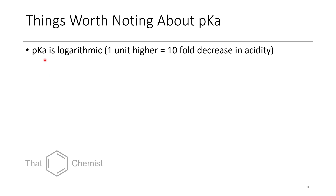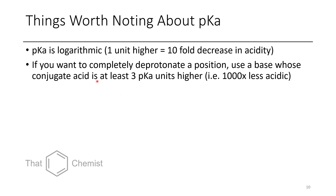It's worth noting that pKa is logarithmic, just like pH parameters are logarithmic. If you increase a pKa by one unit — for example from a pKa of 10 to 11 — that one unit increase is equivalent to a 10-fold decrease in acidity. So something with a pKa of 11 is 10 times less acidic than something with a pKa of 10. If you want to completely deprotonate a position with a pKa of 10, you want to use a base whose conjugate acid has a pKa of at least 13 — i.e., three pKa units higher.